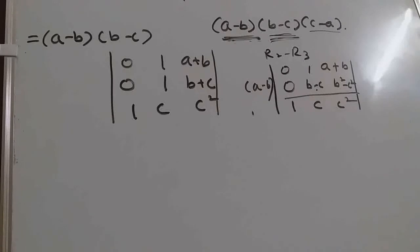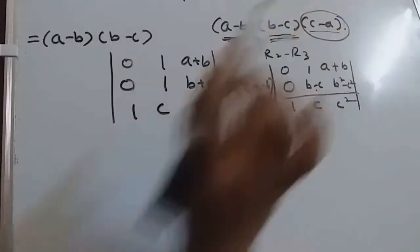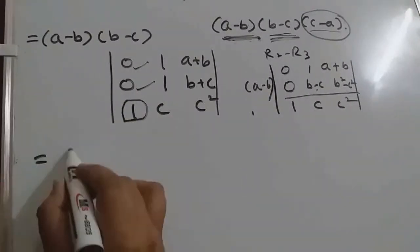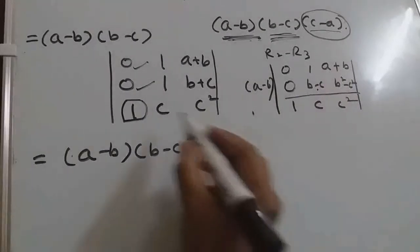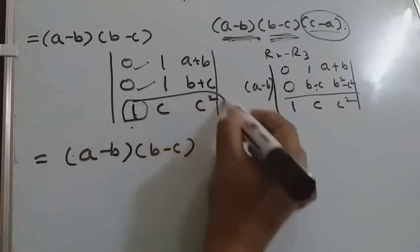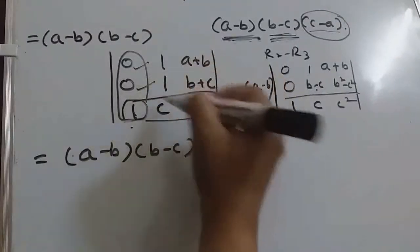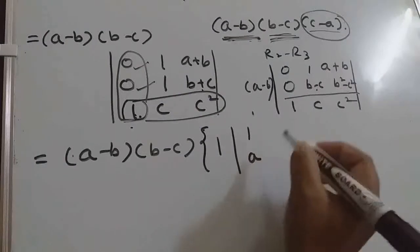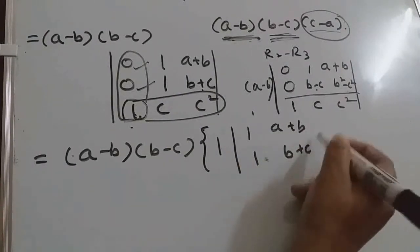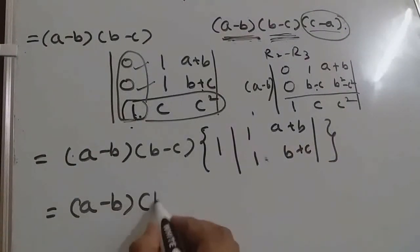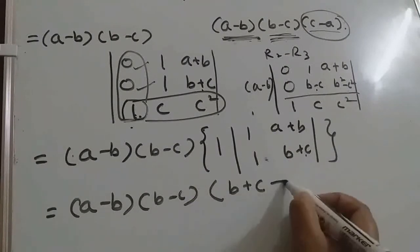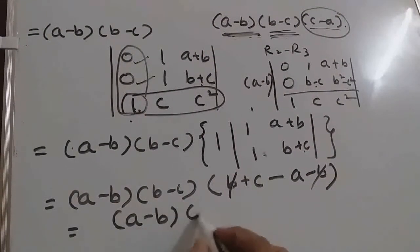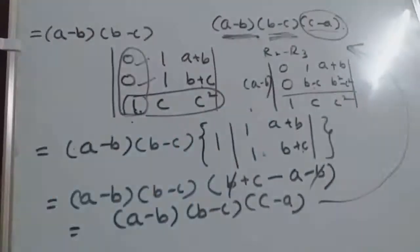Now out of R2 I am taking B minus C common, so first row will be same, second row: 0, 1, and B plus C will come, and 1, C, C squared. Now no need of further properties. We now have two zeros, so we can expand by column 1. So only this element will be there: 1 and then a 2 by 2 determinant. So A minus B, B minus C, and then B plus C minus A plus B gives B minus, the B minus cancels, so the last answer will be C minus A, which is the right hand side.